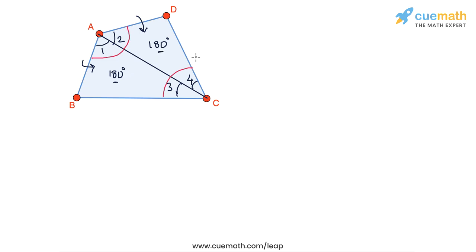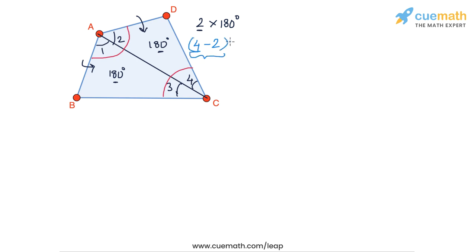So the sum of all four angles equals 180 plus 180, which is 360 degrees. The angles in a quadrilateral sum to 360 degrees, which we can think of as 2 into 180 degrees, where 2 is the number of triangular parts. The relationship between 2 and the number of sides of the quadrilateral, which is 4, is simply 4 minus 2. So we have 4 sides and we do 4 minus 2 into 180 degrees to get the total angle sum.